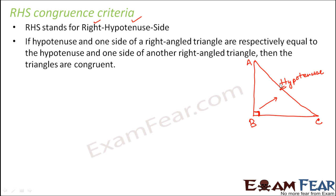Next is the hypotenuse. We match the hypotenuse — if the hypotenuse of this triangle is equal to the hypotenuse of the other triangle. And then we check another side, either AB or BC. One of these sides should be equal to one of the sides of the other right angle triangle. If these three criteria are fulfilled, then we say the two right angle triangles are congruent by RHS criteria. So: if the hypotenuse and one side of a right angle triangle are respectively equal to the hypotenuse and one side of another right angle triangle, then the triangles are congruent.